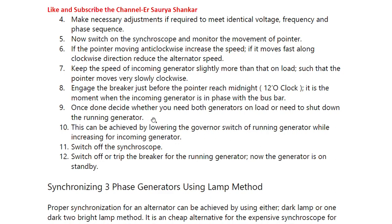Once the breaker is engaged, decide whether you need both generators on load or need to shut down the running generator. This can be achieved by lowering the governor switch of the running generator while increasing it for the incoming generator. All these things are now automatic, but it is important to understand the concept. Switch off the synchroscope, then switch off or trip the breaker for the running generator. The running generator is now on standby.